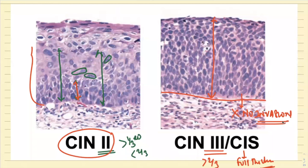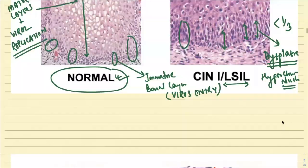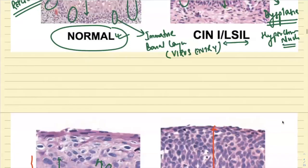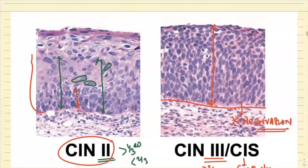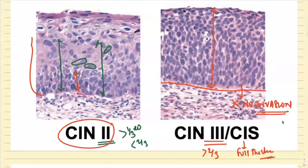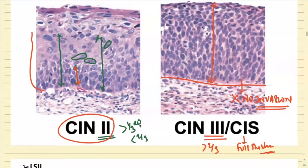SYN1 is called L-CIL, and SYN2, SYN3, and carcinoma in situ all come under the umbrella of H-CIL. All of them will be called H-CIL because the treatment remains the same.